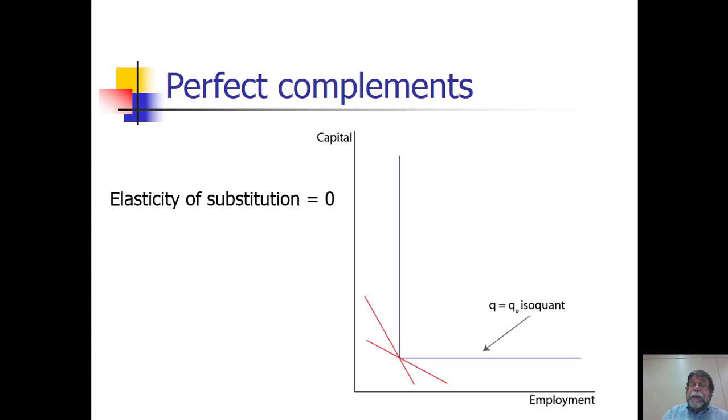Firms will always use them in the same ratio. For example, if you have someone who will only consume peanut butter and jelly with fixed proportions of that, having more peanut butter but no more jelly, or more jelly without any more peanut butter, will not allow you to produce more sandwiches. You're always going to produce it in the same constant ratio.